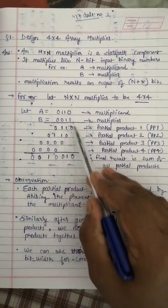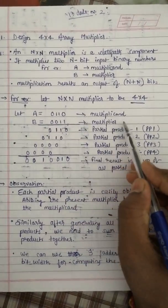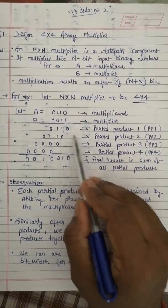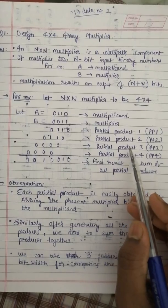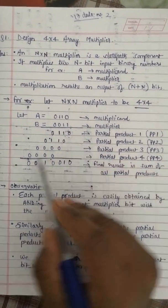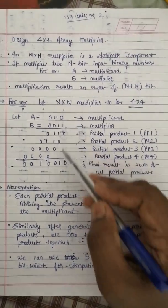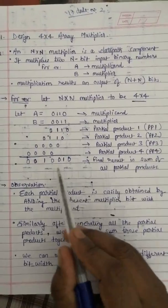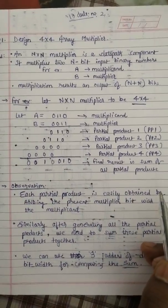You will get all these results: partial product 1, partial product 2, partial product 3, and partial product 4. Then sum all these partial products and you will get the final result, which is nothing but the sum of all partial products. Now we have made some observations in doing this multiplication.